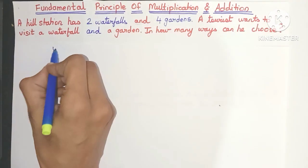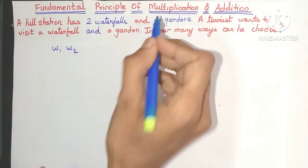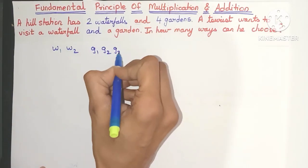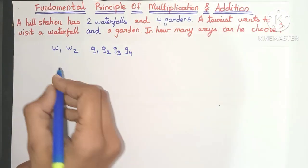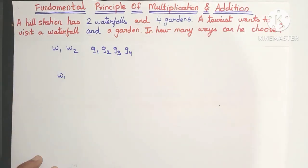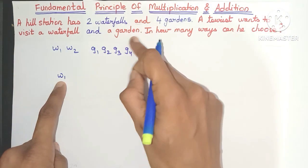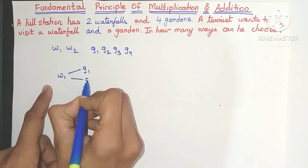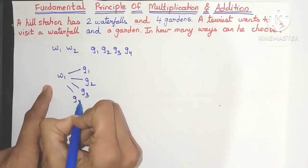Let's name the waterfalls as W1 and W2, and there are four gardens, so let's name them G1, G2, G3, and G4. Now suppose the tourist starts by visiting waterfall W1. After he visits W1, he has to visit a garden, so he can either visit G1, G2, G3, or G4.